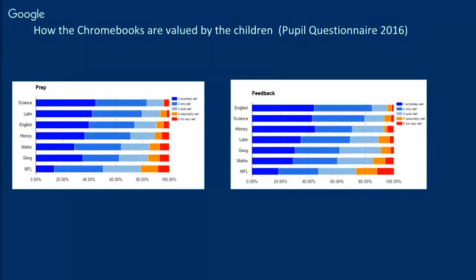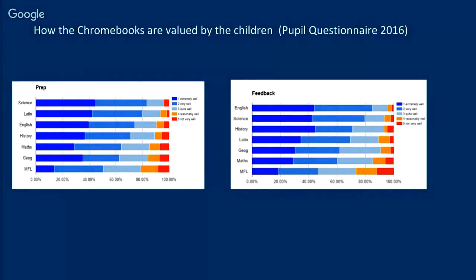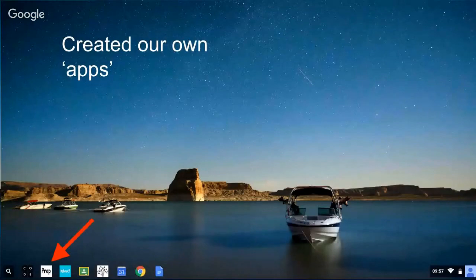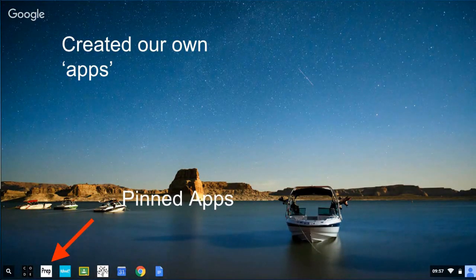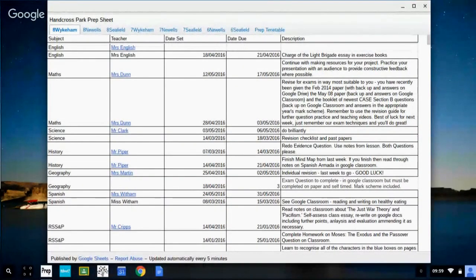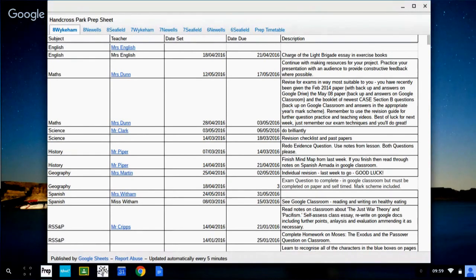A survey response shows how the Chromebooks are valued across different subjects. In science especially, and for helping with prep and homework, Chromebooks are highly regarded. Some subjects lend themselves better to Chromebook use than others, but it's pretty highly regarded for helping with completion of prep and homework and for giving effective feedback to pupils' work. We've also been able to create our own apps pinned to the Chromebooks via the management console — for example, a prep app that's simply a published Google Sheet staff fill in, and pupils press on it to see their prep. Simple but quite effective.